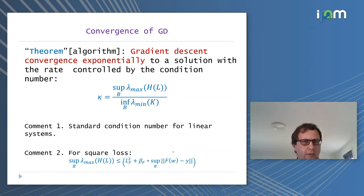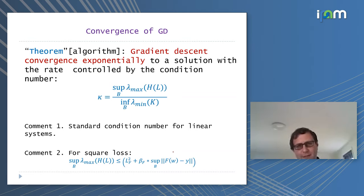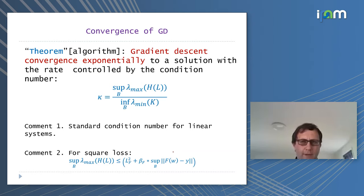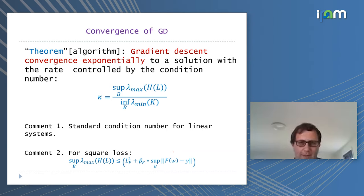Gradient descent converges exponentially to a solution, and the rate is controlled by the condition number. This is a non-local condition number — it's the max of the Hessian of the loss divided by lambda_min of the kernel matrix in the ball. It's non-local because you have to bound these quantities over the whole ball, and you have the Hessian on top and the kernel at the bottom. For a linear system, the Hessian disappears and you recover the usual condition number.